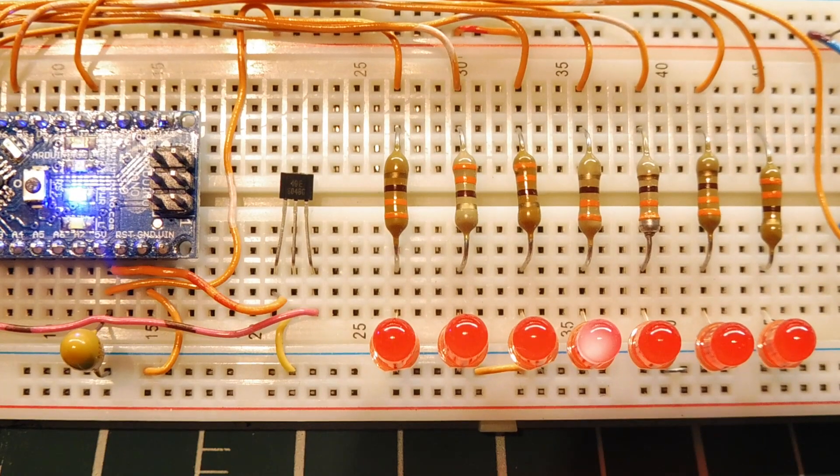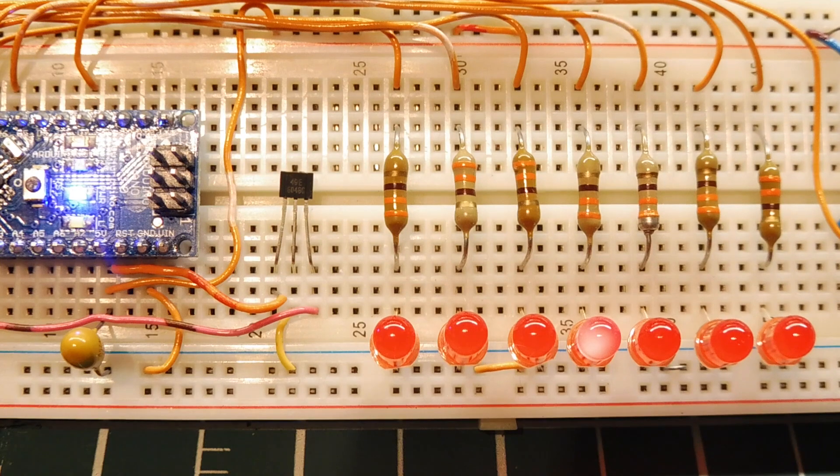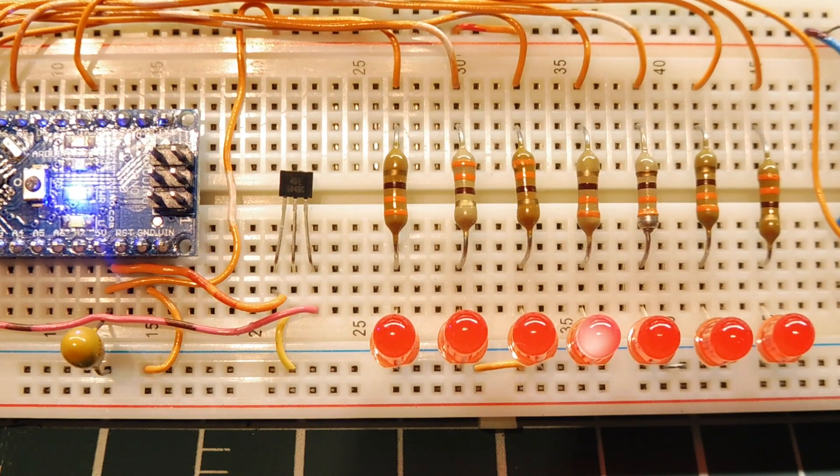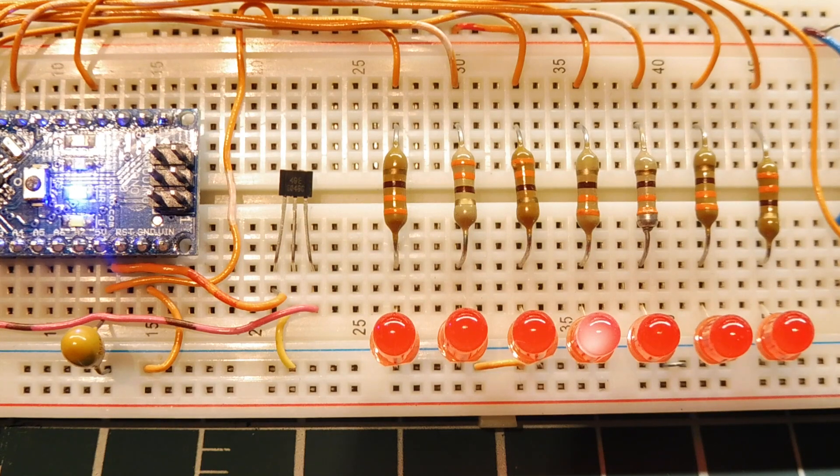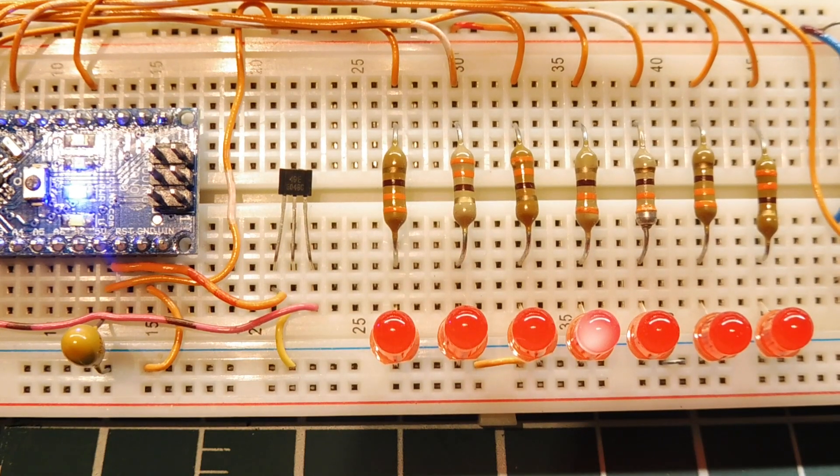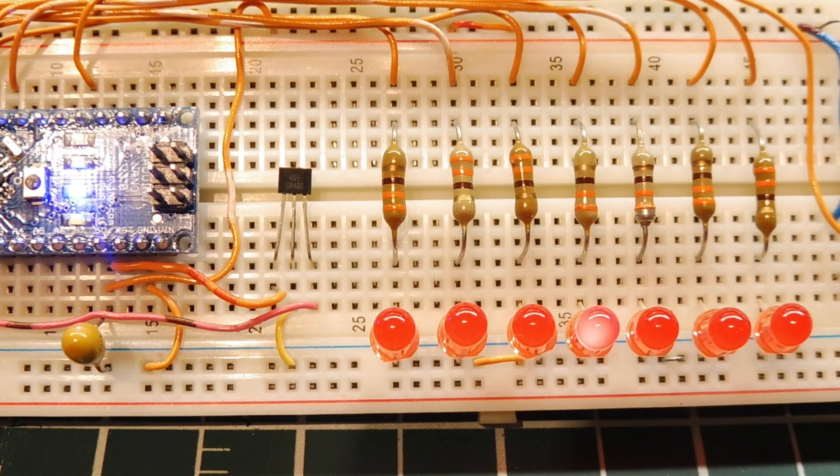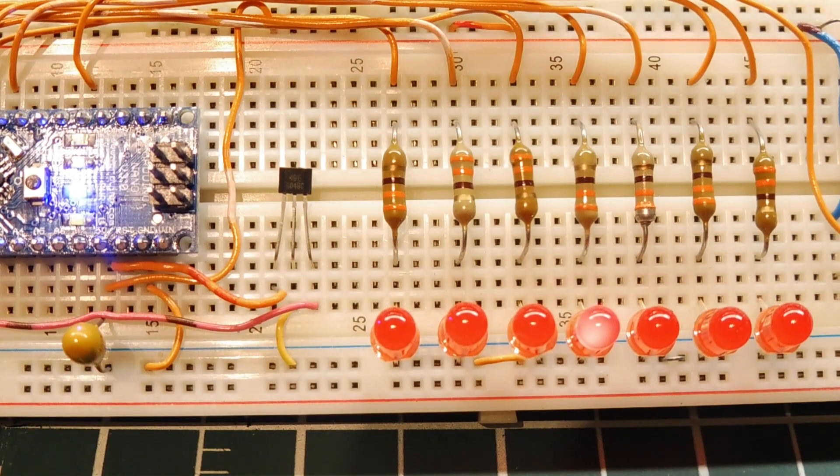Next we're going to look at the linear Hall effect switch. This is the OH49E, which puts out a voltage proportion to the magnetic field strength. It puts out a voltage of 2 millivolts per gauss. And you can see you've got 7 LEDs, and the one LED that's on indicates zero.